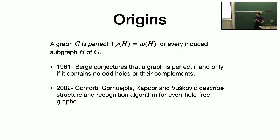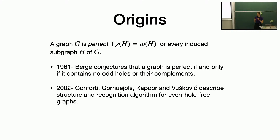Michele Conforti, Gérard Cornuéjols, Ajay Kapoor, and Kristina Vušković got a structural decomposition theorem for even-hole-free graphs. They used this decomposition theorem to get a polynomial-time algorithm to recognize whether or not a graph is even-hole-free. All of this was motivated by wanting to prove the strong perfect graph conjecture. The idea was that by working with even-hole-free graphs they could develop techniques applicable to graphs that don't contain an odd hole or a complement of an odd hole. This makes sense because even-hole-free graphs pretty much don't contain any complements of odd holes except for the hole of length 5, since every odd hole of length 7 or more has an induced two-edge matching, which means that in the complement there is a hole of length 4, so it would not exist in an even-hole-free graph.